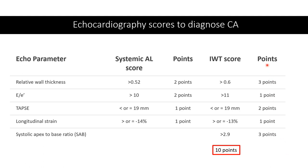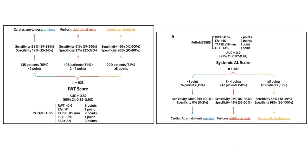Our patient checked all the points to diagnose amyloidosis, totaling 10 points. When you use the IWT score and get eight points or more, you can diagnose cardiac amyloidosis with a specificity of 98%, allowing you to rule in amyloidosis and proceed with your next investigations.